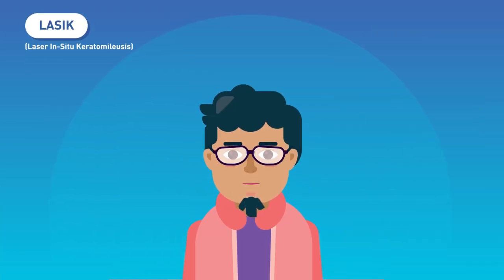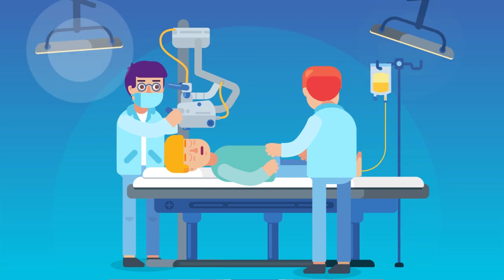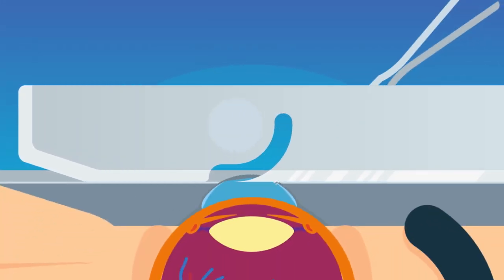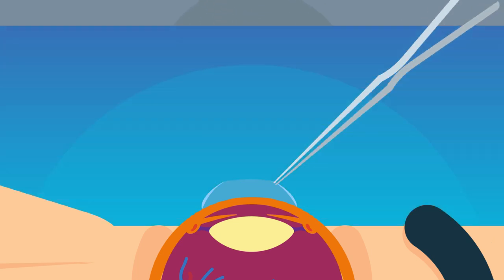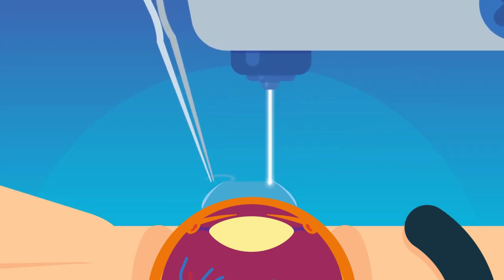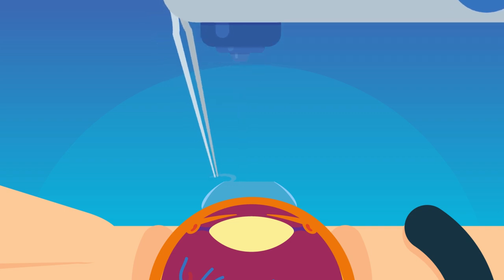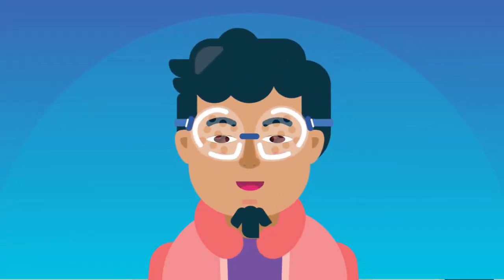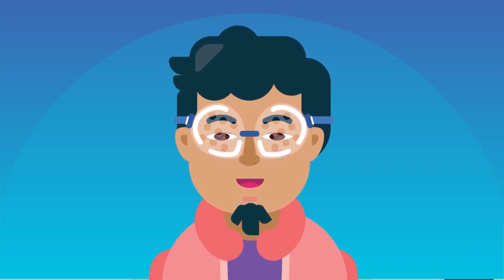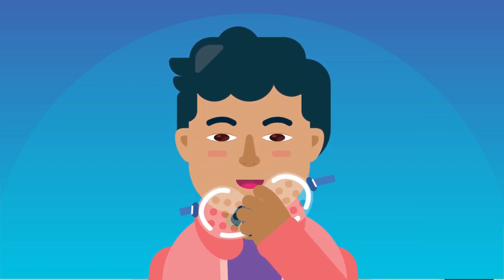LASIK - Laser In-Situ Keratomileusis: Corrects up to four diopter, a famous and frequently performed surgery nowadays. In this procedure, a device, keratome, slices a flap of cornea, 160 micrometers. Laser is applied to change the corneal shape and then the flap is repositioned. Advantages over other procedures: Absence of post-operative pain, more rapid visual rehabilitation.